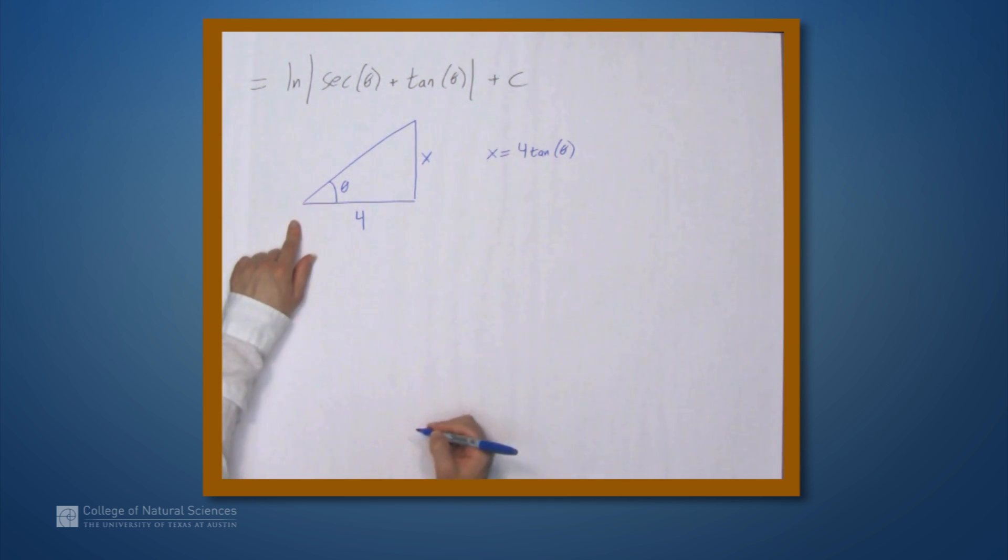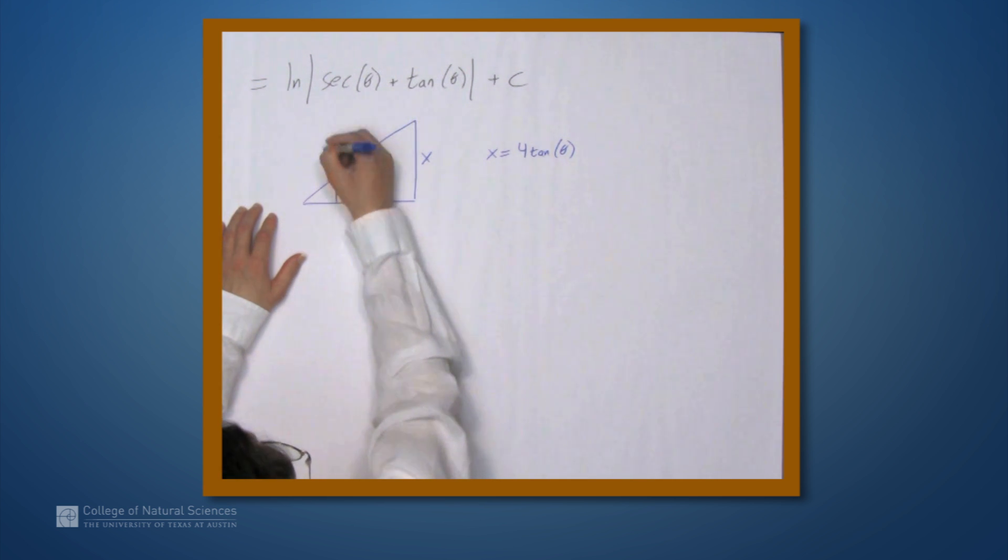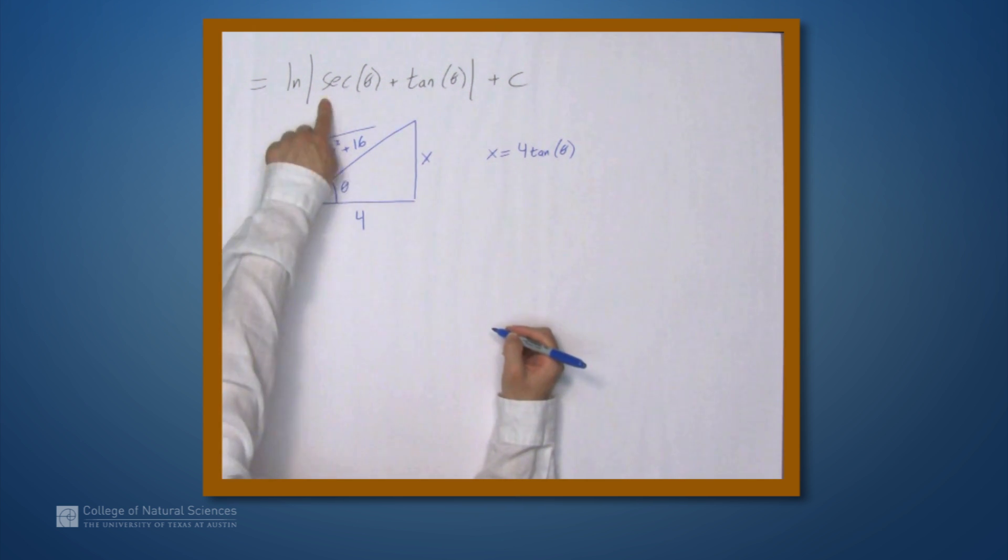Using the Pythagorean formula, we can fill in the length of the hypotenuse, so we get the square root of x squared plus 16. Now secant theta can be expressed just in terms of x, as can tangent theta.